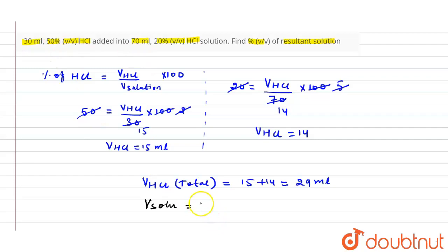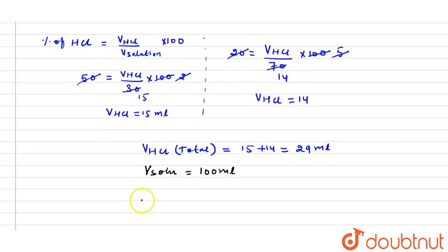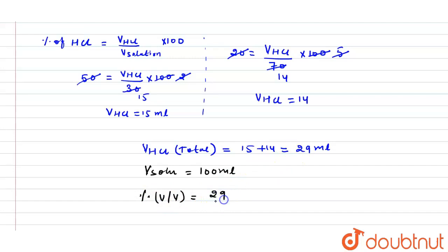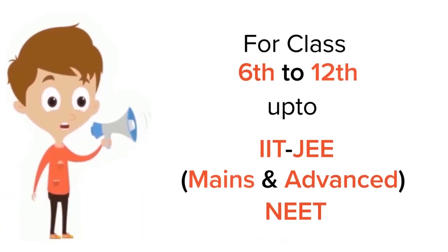From these values, we calculate the percentage v/v: (volume of HCl / volume of solution) × 100 = (29 / 100) × 100. The 100s cancel, giving us 29% v/v as the percentage of the resultant solution. I hope you understand this concept. Thank you.